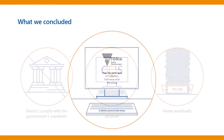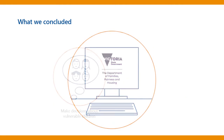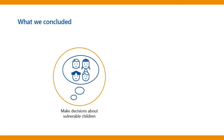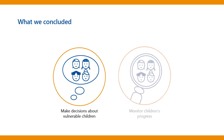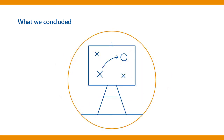This means the Department may not have easy access to high quality data to make decisions about vulnerable children and monitor children's progress in care. The Department told us it's aware of these issues and is working on a plan to fix them.